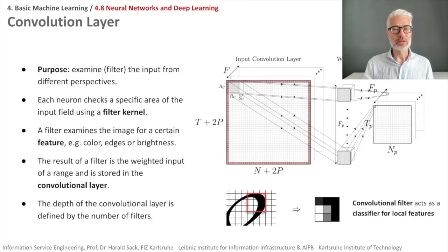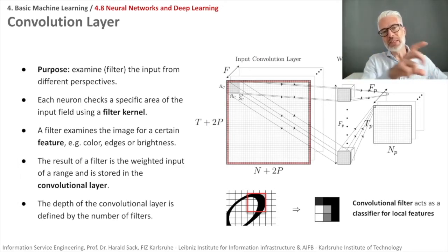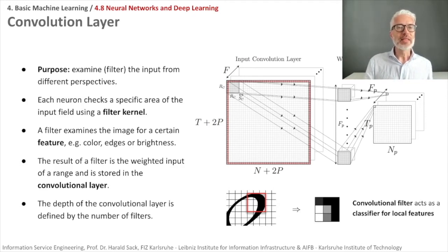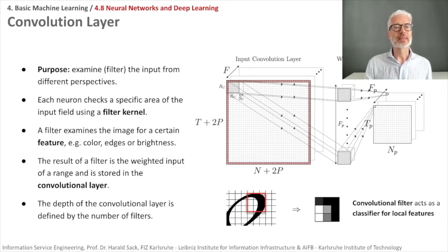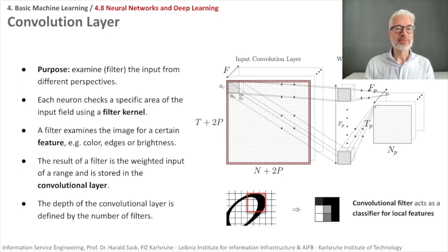Let's look into convolution and pooling layers. The image is fed into the network, starting with convolutional layers. A small window slides row by row over the image. Each neuron checks a specific area of the input field using a filter kernel. A filter kernel examines the image for certain features like color, edges, or brightness. The result of a filter is a weighted input of a range and is stored in the convolutional layer.